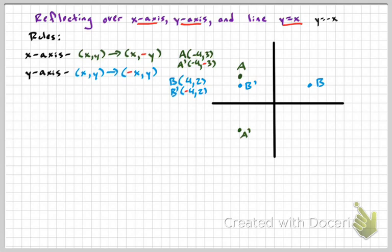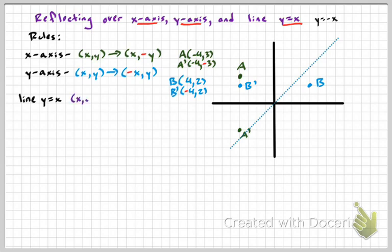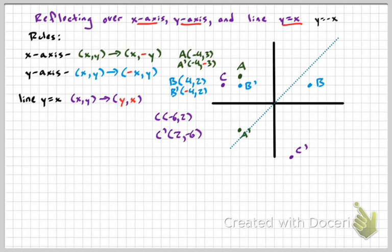The line Y equals X is a diagonal line with a Y intercept of 0 and a slope of 1. If you want to reflect over that line, it's hard to count because the distance must be equidistant. The rule to remember: if your original point is XY, reflecting over Y equals X just swaps them — it becomes YX. So X becomes Y and Y becomes X. If coordinate C is at negative 6, 2, reflecting over Y equals X gives the new coordinate 2, negative 6.